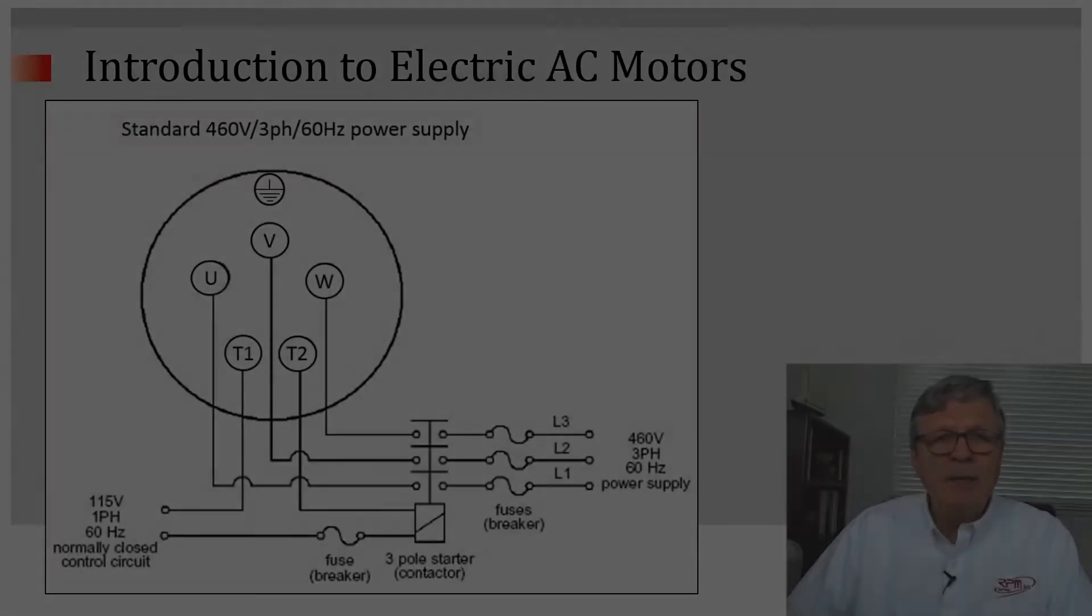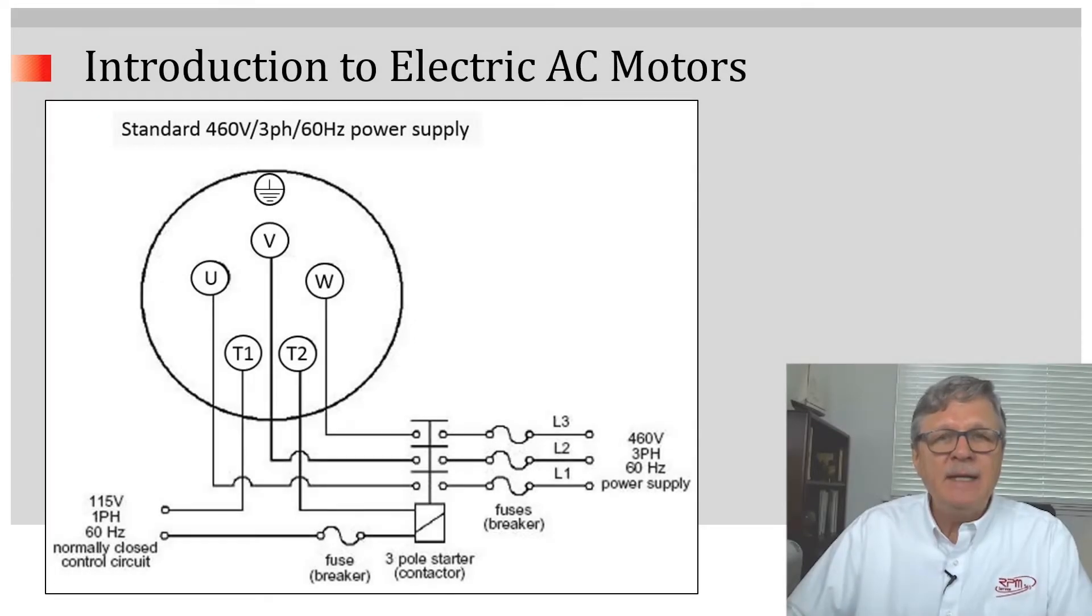In this circuit diagram, you can see that three-phase power is connected to the Romeka motorized pulley with phase 1 connecting to terminal U, phase 2 connecting to terminal V, and phase 3 connecting to terminal W.